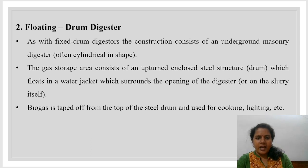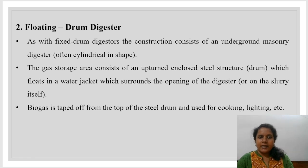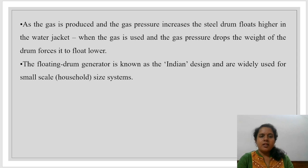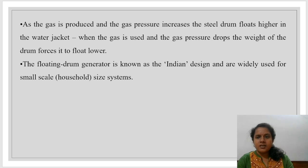Biogas is tapped off from the top of the steel drum and used for cooking and lighting. As the gas is produced and the gas pressure increases, the steel drum floats higher in the water jacket. When the gas is used and gas pressure drops, the weight of the drum forces it to lower.